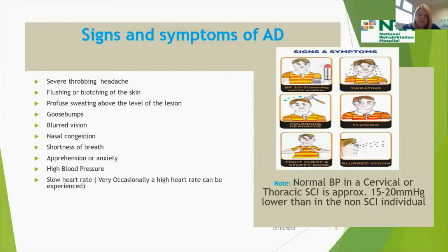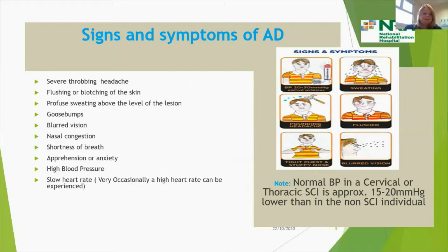A question I get asked a lot is: how do I know I have it? One of the first symptoms is a severe throbbing frontal headache. You might get flushing or blotching of the skin above the level of your injury, and profuse sweating above the level of your lesion. You might almost see a straight line across your chest — red and blotchy above it, with sweating and goosebumps above the level of injury.